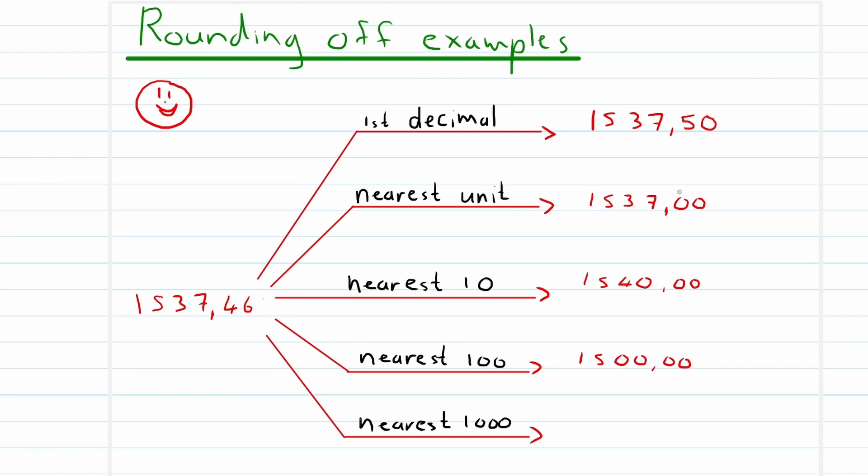The only reason why I'm showing the double zeros is because our original number had two decimal places there, so I have to stick with that. Then last, nearest 1000. So now we're looking at this 5 and how it influences the 1.